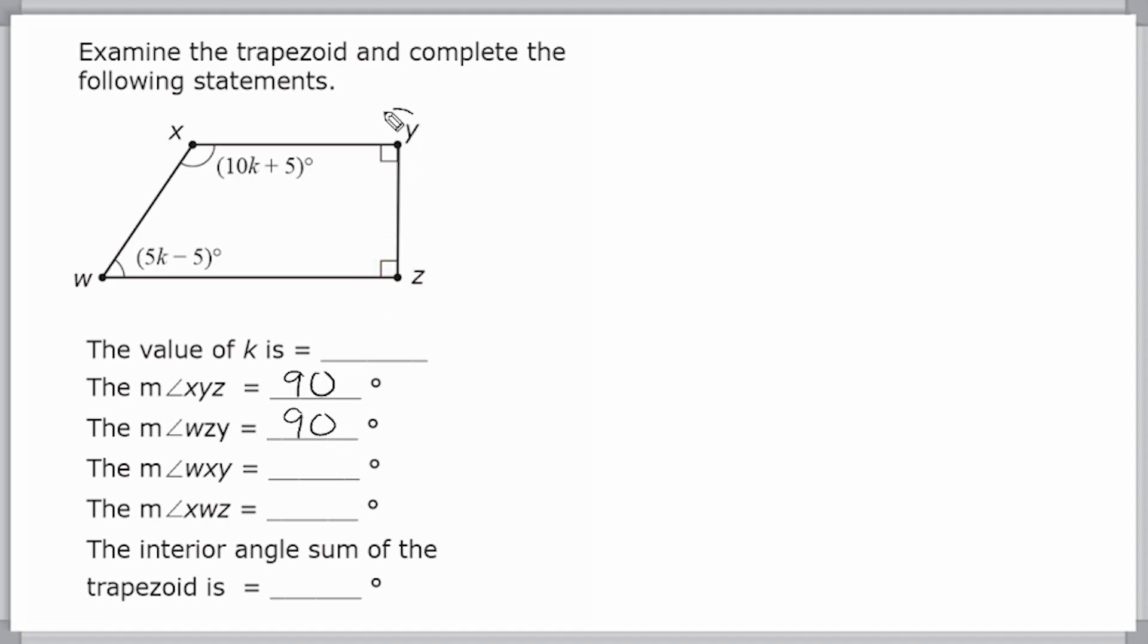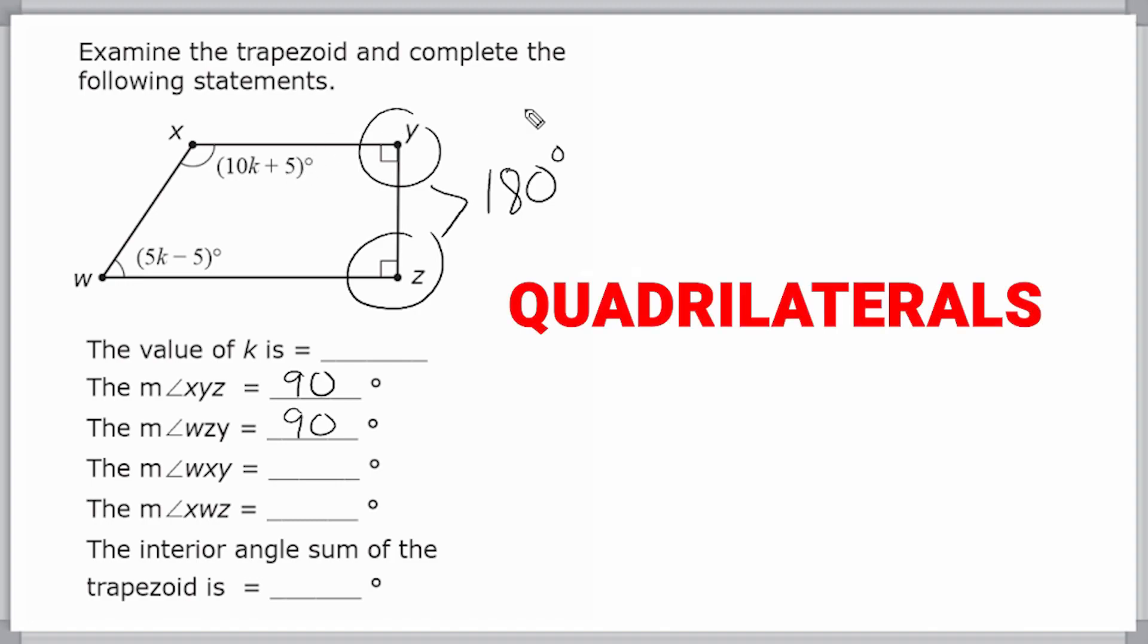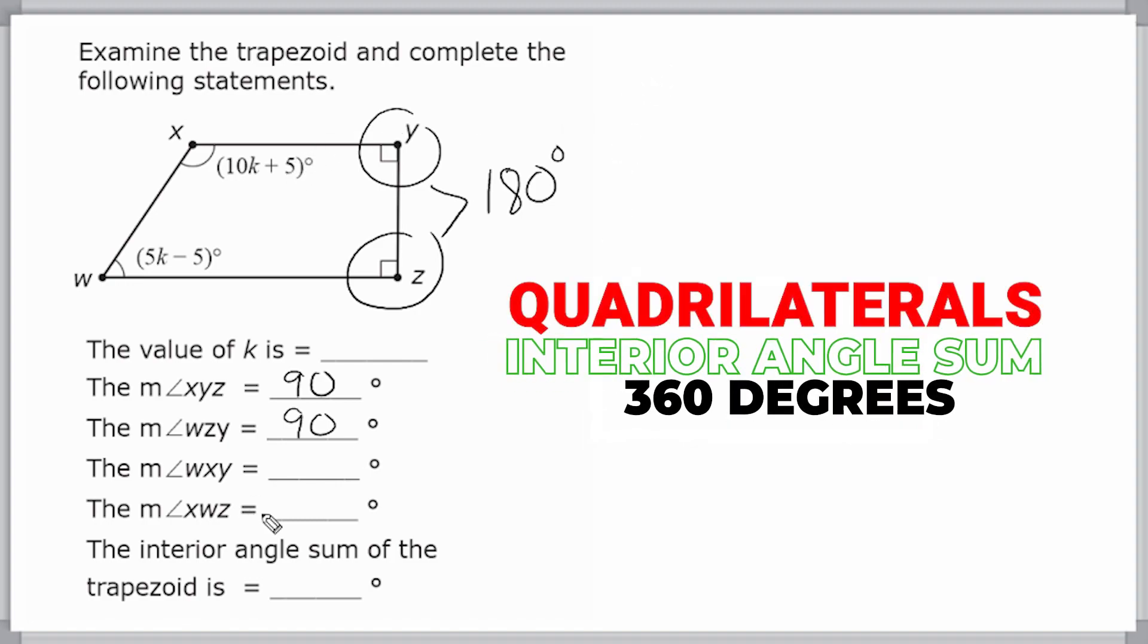Alright, so we know that this angle and this angle added together is a total of 180 degrees. Now, a trapezoid is a quadrilateral, and any quadrilateral has an interior angle sum of 360 degrees.